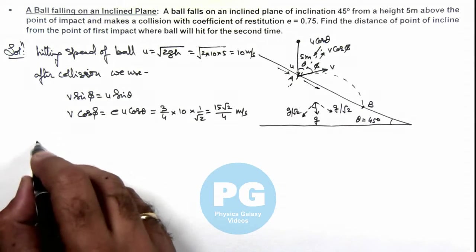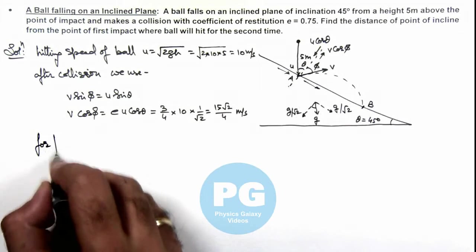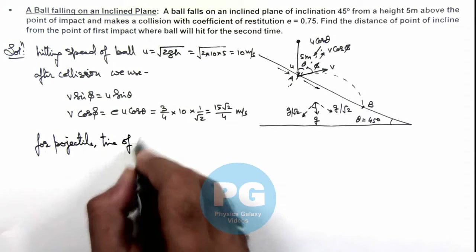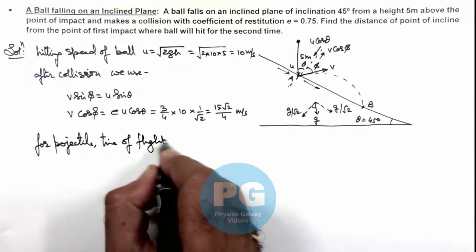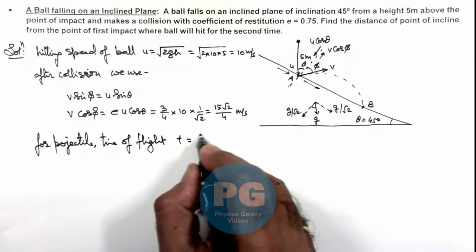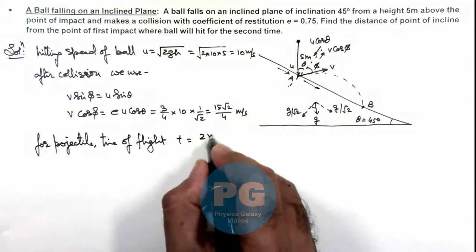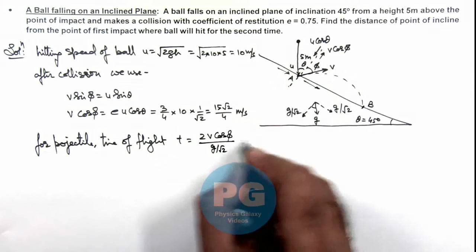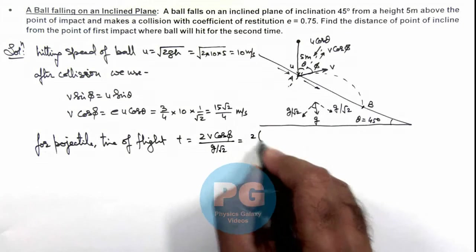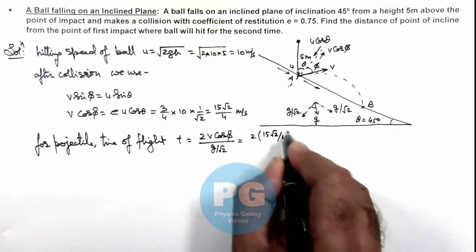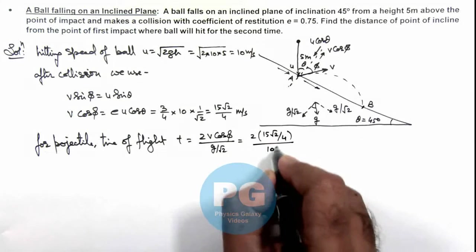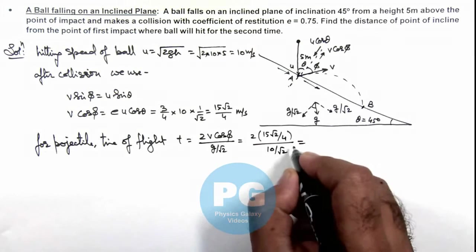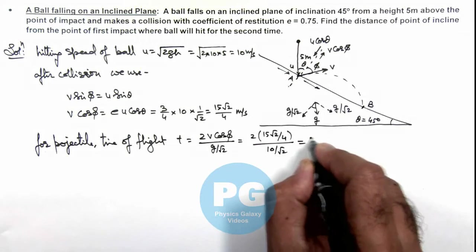The time of flight can be given as 2 × v cos φ divided by g/√2. If we substitute the values, this is 2 × (15√2/4) divided by (10/√2). On simplifying, we get the time of flight to be 3/2 seconds.